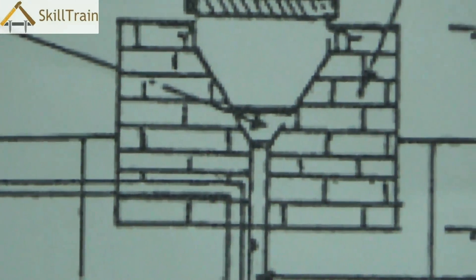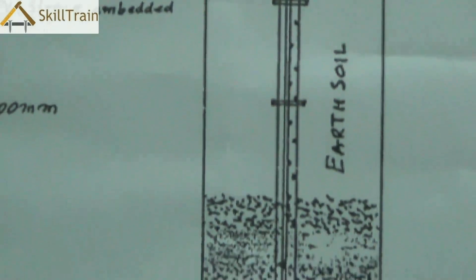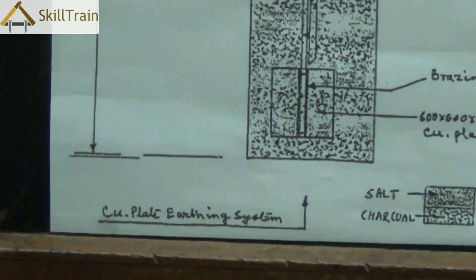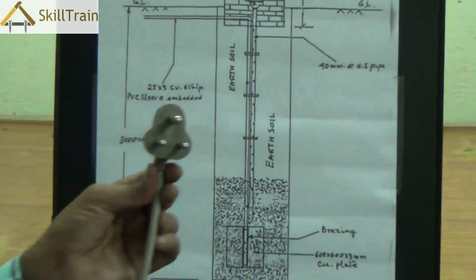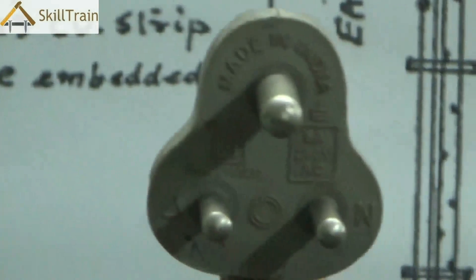Now what is earthing? Earthing is essentially a way in which you can direct any excess current or leakage current back into the soil. And this is necessary for all heavy equipments and this can be very clearly seen in the plug point of all these heavy equipments.